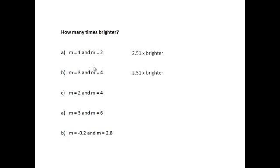How many times brighter is magnitude 2 compared with magnitude 4? Well, now there are two orders of magnitude. So the answer is going to be 2.51 times 2.51, which on the calculator works out at 6.3 times brighter. How many times brighter is magnitude 3 compared with magnitude 6? Well, here we have a difference of three orders of magnitude. So the answer is going to be 2.51 times 2.51 times 2.51, which is 15.8 times brighter.